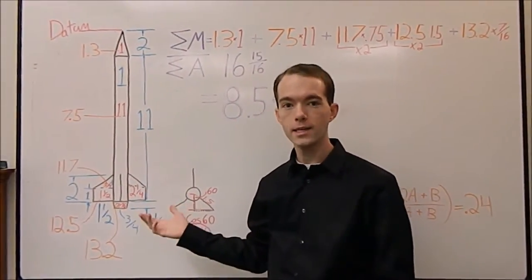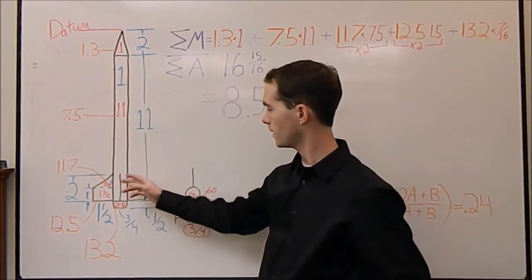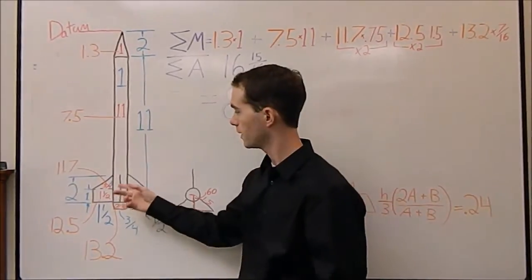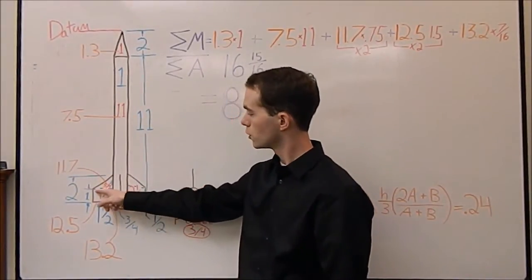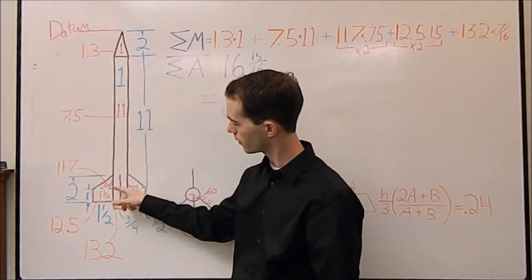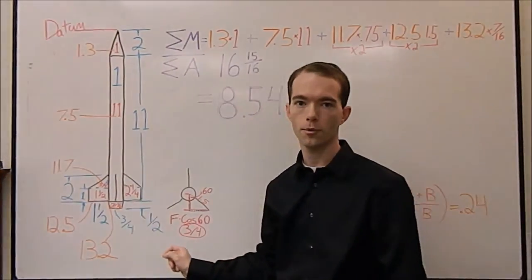What you've got to do to make sure to make it easy for yourself is to break it up into areas that you know, which is pretty much triangles and rectangles. Those are really easy to do. So we take this fin here and we're going to break it up between a triangle and a rectangle and calculate their areas separately.